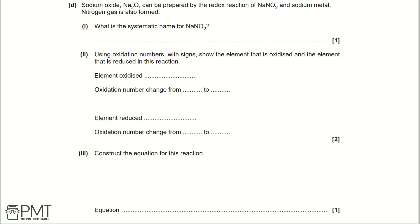Part D: Sodium oxide Na₂O can be prepared by the redox reaction of NaNO₂ and sodium metal. Nitrogen gas is also formed. Part 1: What is the systematic name of NaNO₂? So, Na, that's sodium. So, the first part of our name would be sodium. And NO₂ is a nitrate ion. So, sodium nitrate is the answer for part 1. You get a mark for getting this whole name correct.